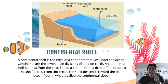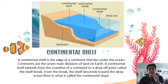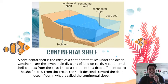So what is a continental shelf? A continental shelf is the edge of a continent that lies under the ocean. Continents are the seven main divisions of land on Earth. A continental shelf extends from the coastline of a continent to a drop-off point called the shelf break. From the break, the shelf descends toward the deep ocean floor in what is called the continental slope.